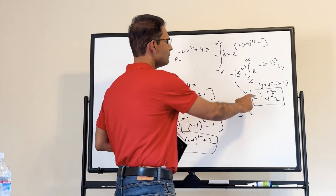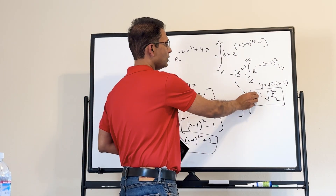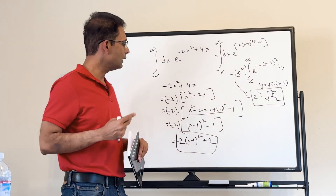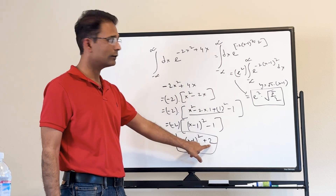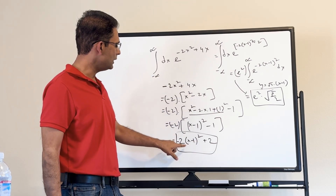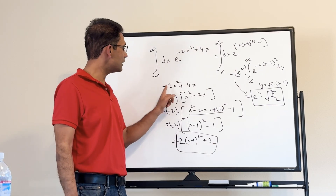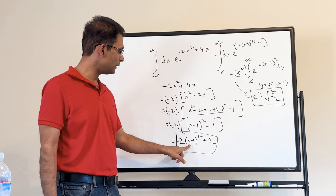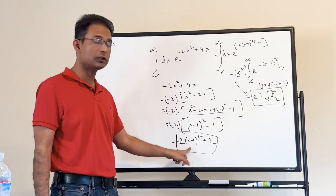Notice that the exponent of e in the result is 2, which is the maximum value of the original expression minus 2x squared plus 4x. Written as the negative of a square plus 2, the maximum value is 2, because a negative sign multiplies a squared term, making that term's maximum contribution zero.